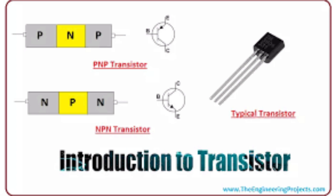Transistors can be made from various types of semiconducting materials, but the most common types are made from silicon. They come in different forms, including bipolar junction transistors (BJTs) and field effect transistors (FETs).